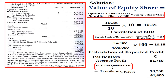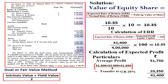In this way we calculate both values — intrinsic value and yield value. Sometimes we may be asked to calculate the dual value or fair value of the share. In that case, the formula is: (intrinsic value + yield value) / 2. Applying: (9.25 + 10.35) / 2 = 9.80. That is our fair value or dual value of the share — it is the average of both values.